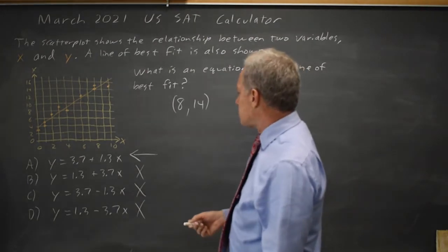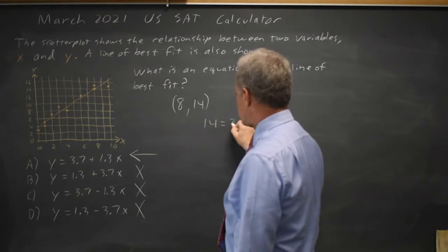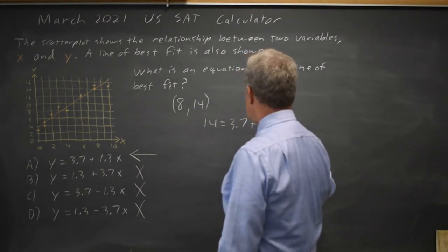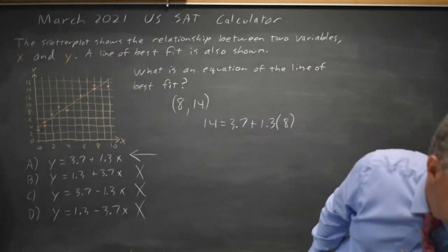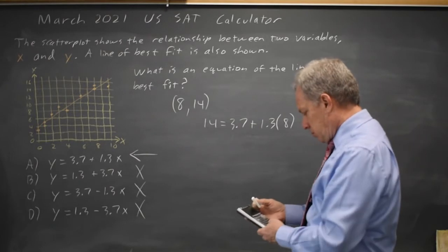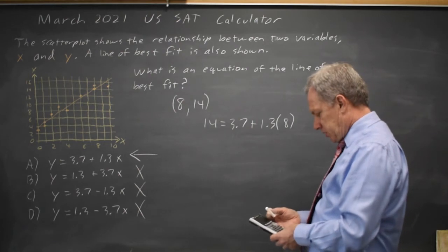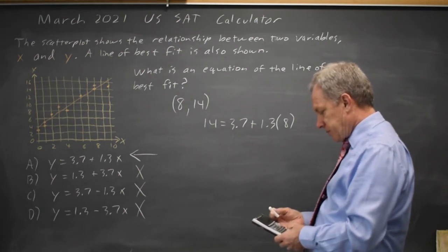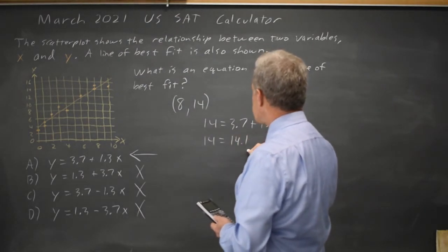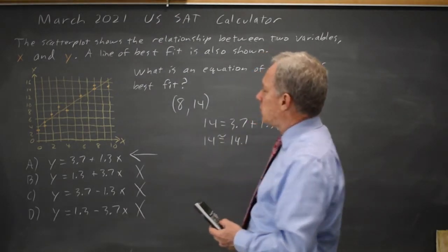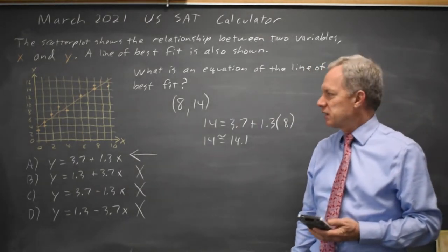And if I substitute that into choice A, I get my y-value, which is 14, equals 3.7 plus 1.3 times my x-value, which is 8. Checking that on my calculator, 1.3 times 8 is 10.4 plus 3.7 is 14.1. And that's approximately correct within the accuracy needed for a line of best fit, a scatter plot, and reading this by eye.